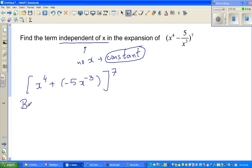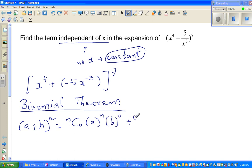So the binomial theorem, always good to write the binomial theorem. If it is a plus b to the power n, is nC0 times a to the power n, b to the power 0, plus nC1, a to the power n minus 1, b to the power 1, plus, ultimately, nCn, a to the power 0, b to the power n.